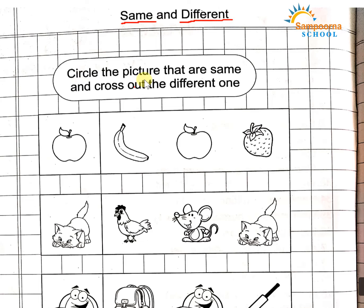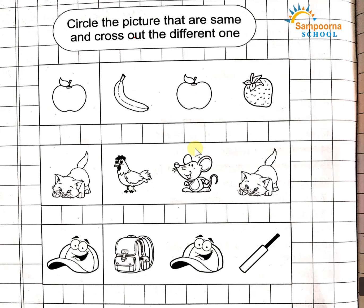Circle the picture that is the same and cross out the different one. We will see which three pictures we have to circle, and the different ones we have to cross out. Let's start with the exercise.